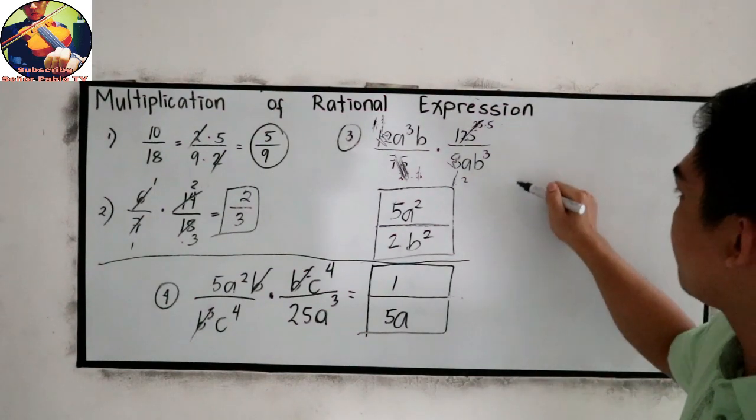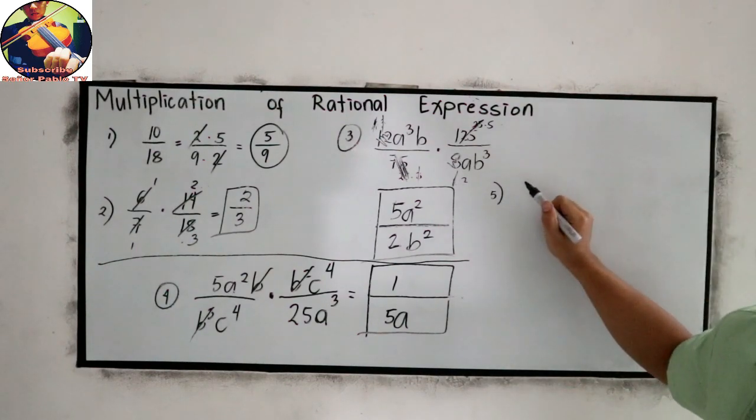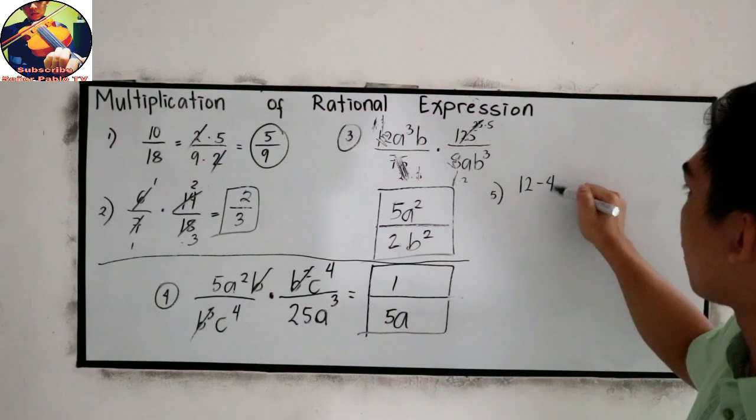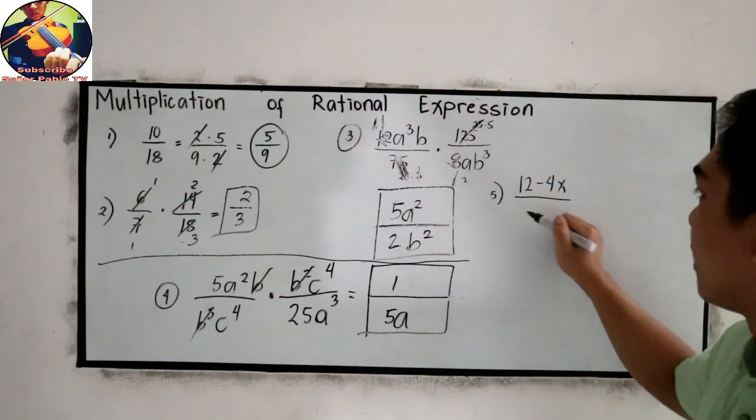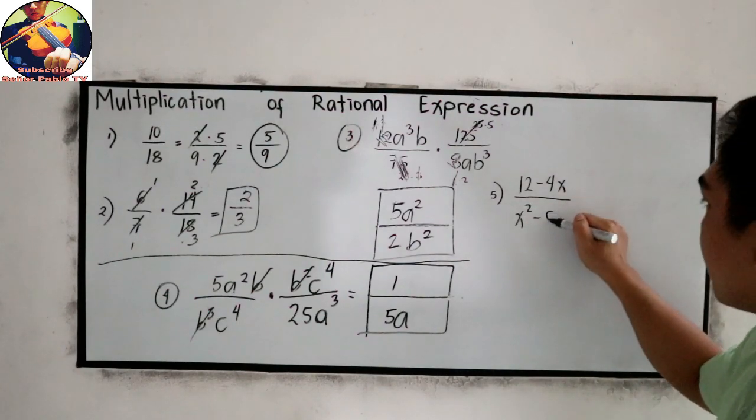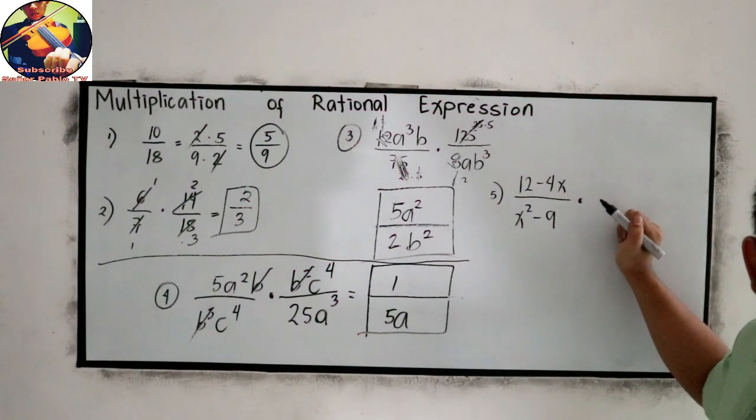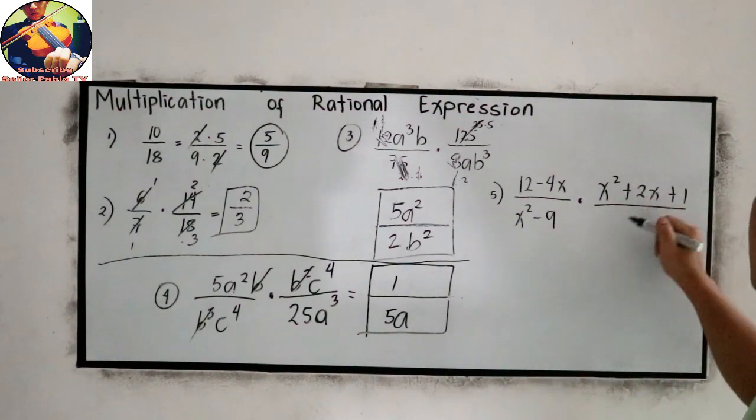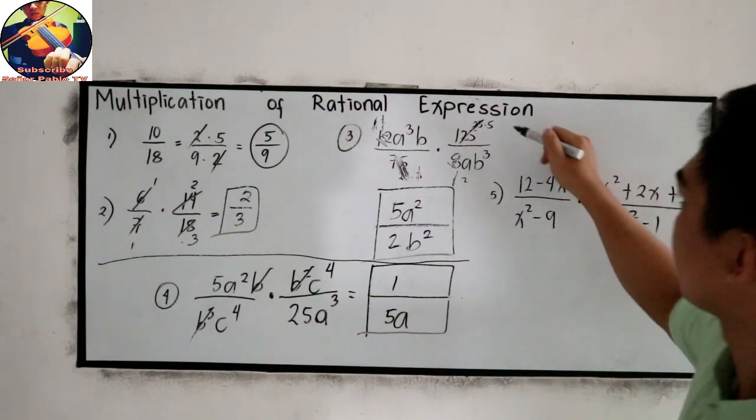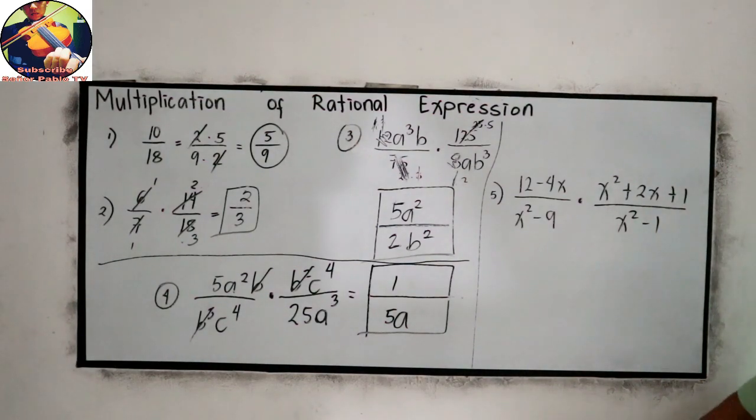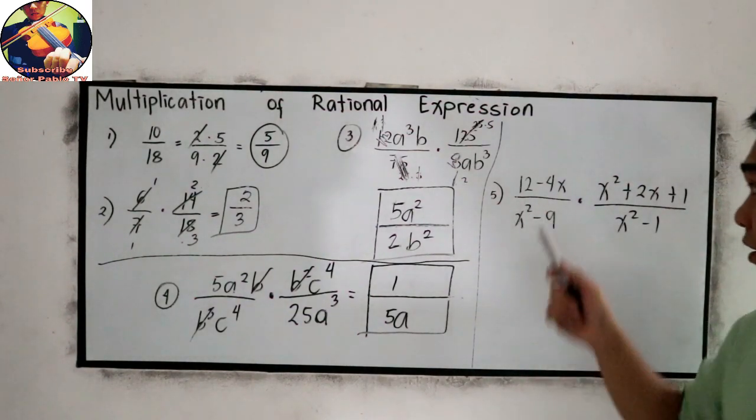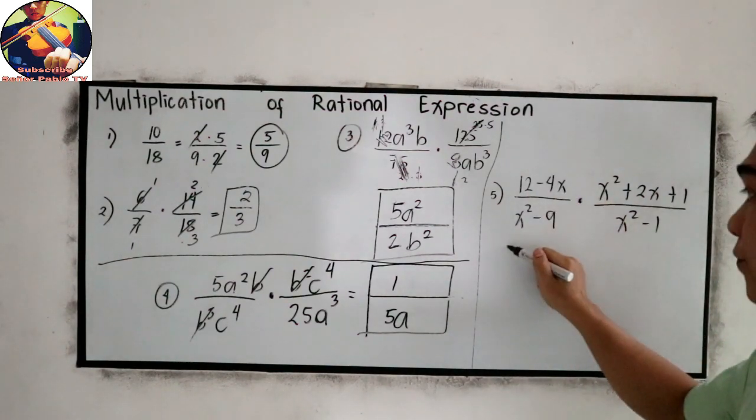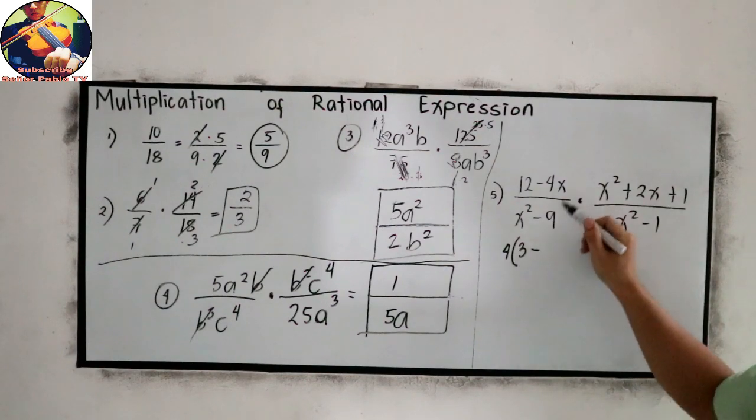Let's try number 5. The problem is (12 - 4X) all over (X² - 9) times (X² + 2X + 1) all over (X² - 1). This is our example number 5. In our numerator, let's factor. The common factor is 4. So 4(3 - X). And for our denominator, (X + 3)(X - 3).